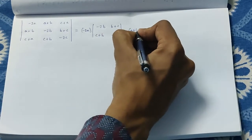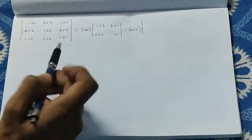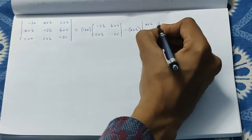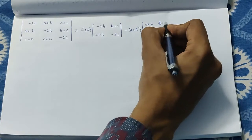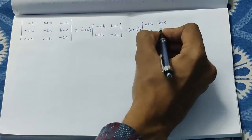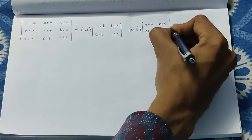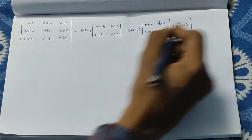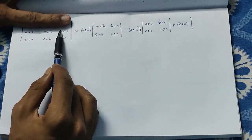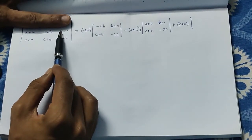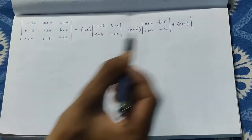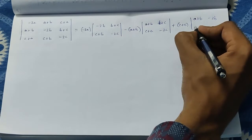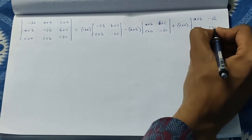Then plus (a + b) into: (a + b), (b + c), (c + a), minus 2c. Plus (c + a) into: (a + b), minus 2b, (c + a), (c + b). Then (a + b), minus 2b, (c + a).